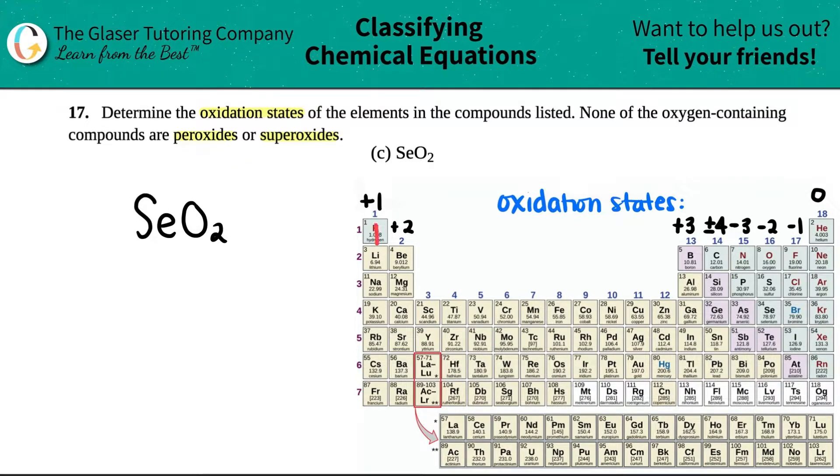So anything in group one generally has or always has a plus one charge. Anything in group two generally has a plus two charge. But sometimes the oxidation states or the charges, so that's another word, oxidation state, aka just find the charge. Sometimes you're not going to follow a trend, but the trend is really good to know.